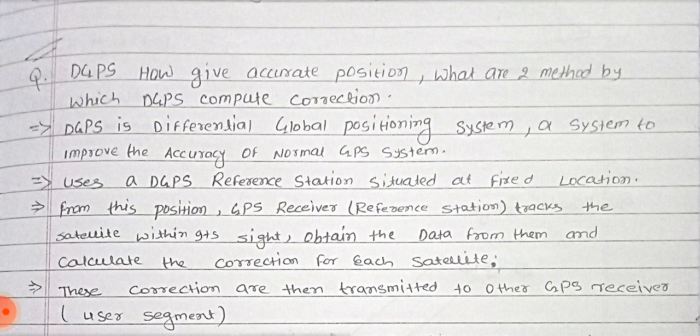DGPS uses a DGPS reference station situated at a fixed location. From this position, the GPS receiver, that is the reference station, tracks the satellites within its sight and obtains the data from them.